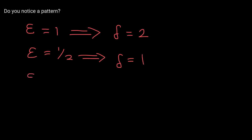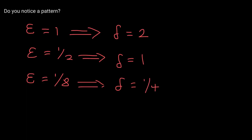Do you see the pattern? If we said epsilon equals one eighth, we'd want the distance between function values and the limit to be less than one eighth. It seems like the delta that corresponds to a given epsilon is just twice the value of epsilon. So twice one eighth would be one fourth. For any epsilon given, delta is going to be twice epsilon.